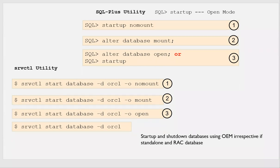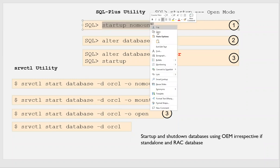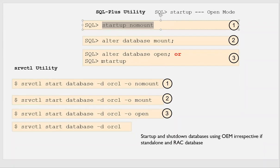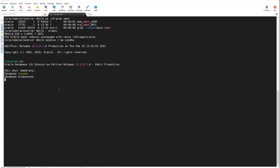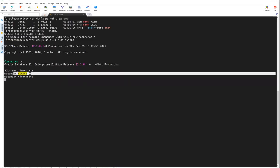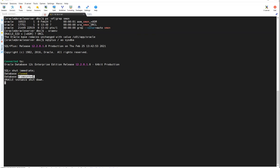You can also use the SRVCTL utility for Oracle Restart or RAC to start the database at no-mount, mount, or open — whatever you need. The database is now dismounted. You can see: database closed, database dismounted, and instance shut down.